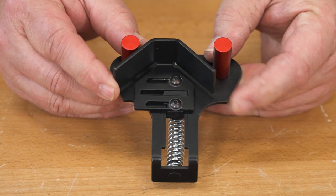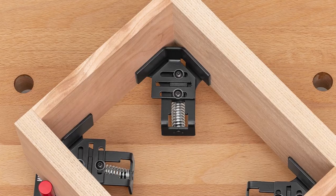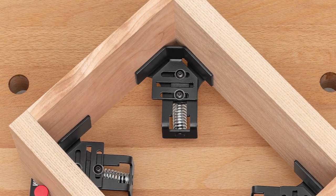The clamping jaws slide side to side, allowing you to build with materials of up to a quarter inch difference in thickness.